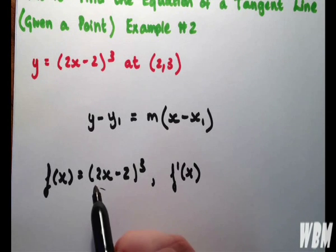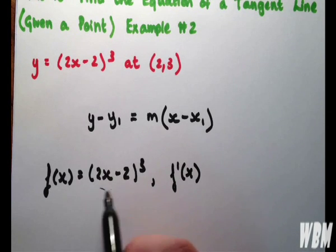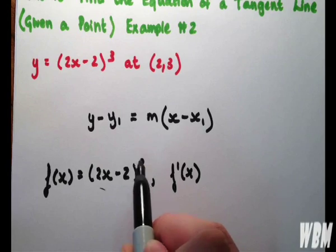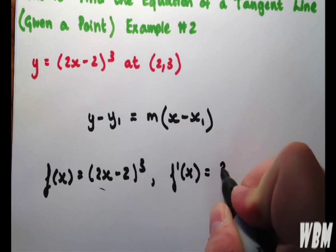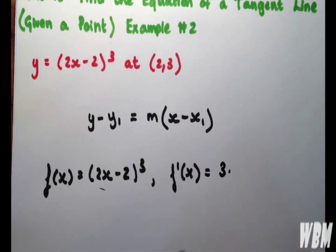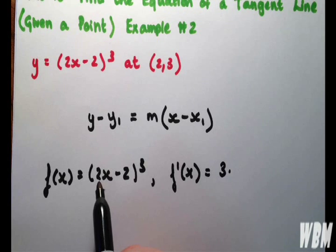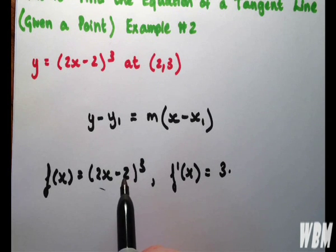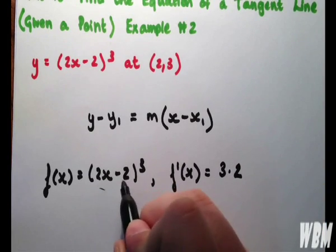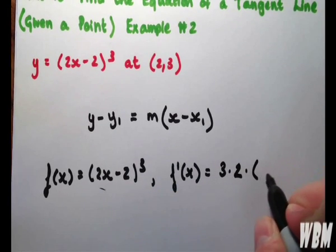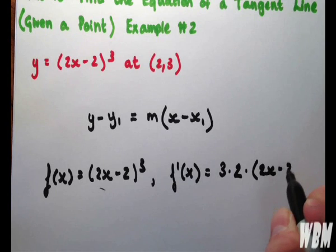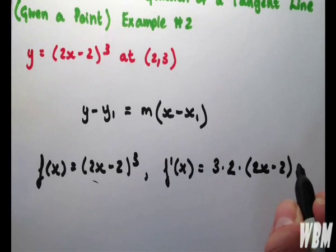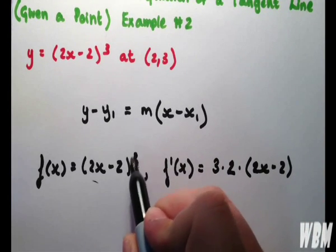Now, when differentiating a bracket to a power, we bring down the power, 3, and we multiply 3 by the derivative of the bracket, which is 2, because 2x differentiates to 2 and minus 2 becomes 0. Then we write the bracket as it is, and we simply take 1 off the power.